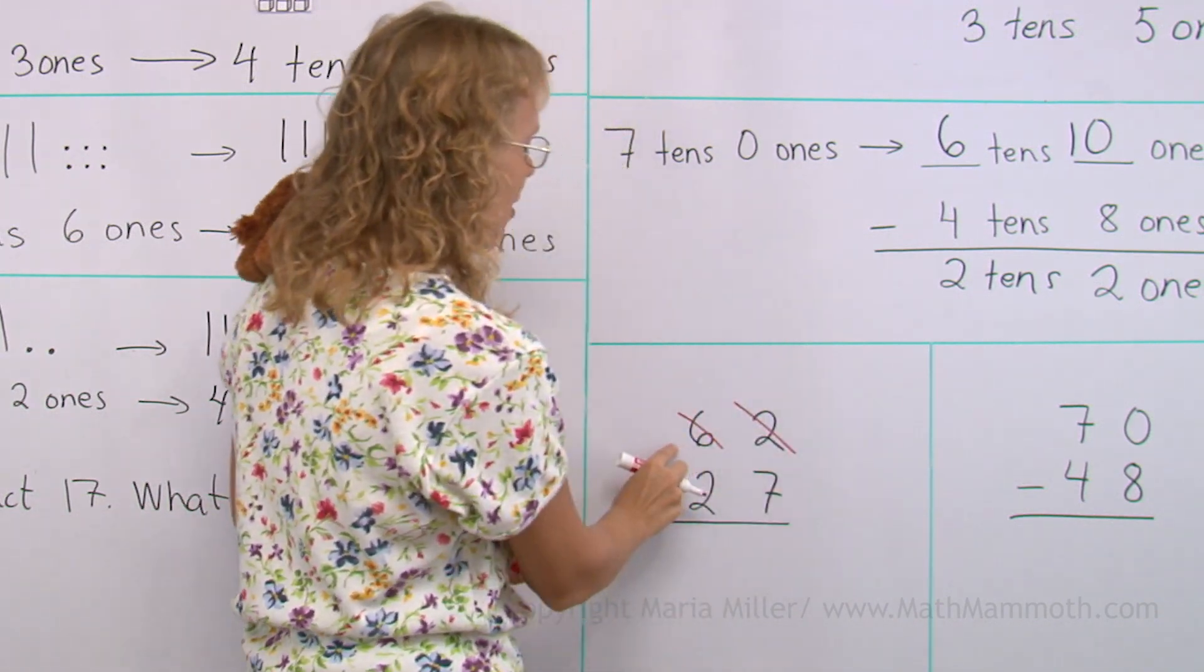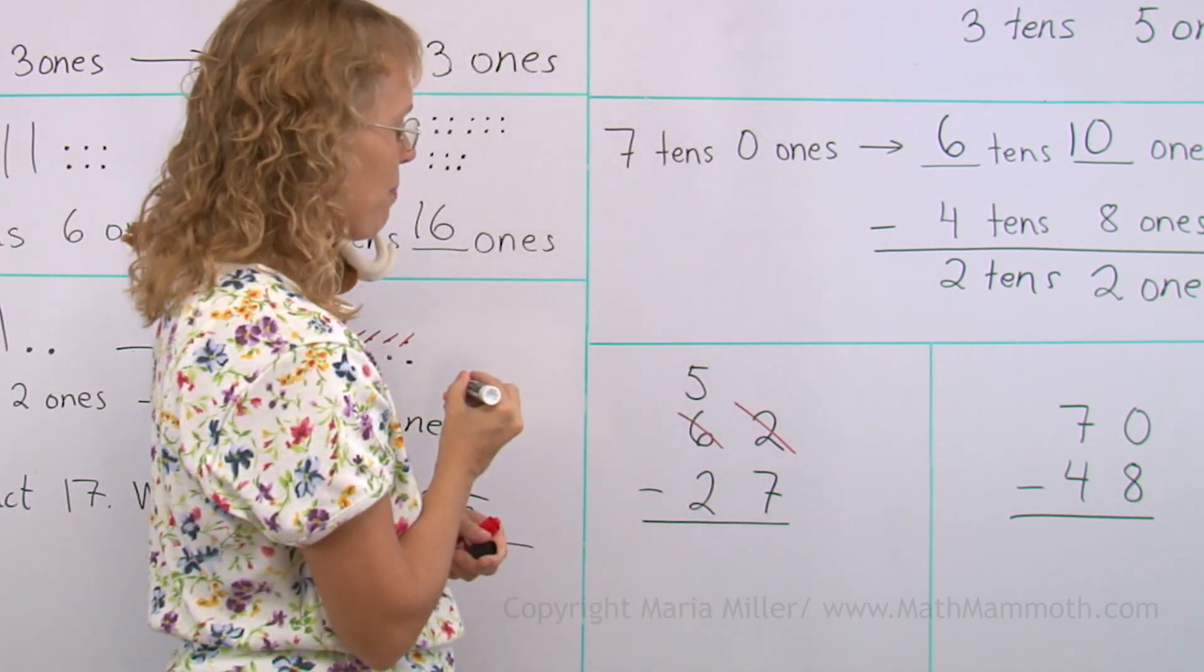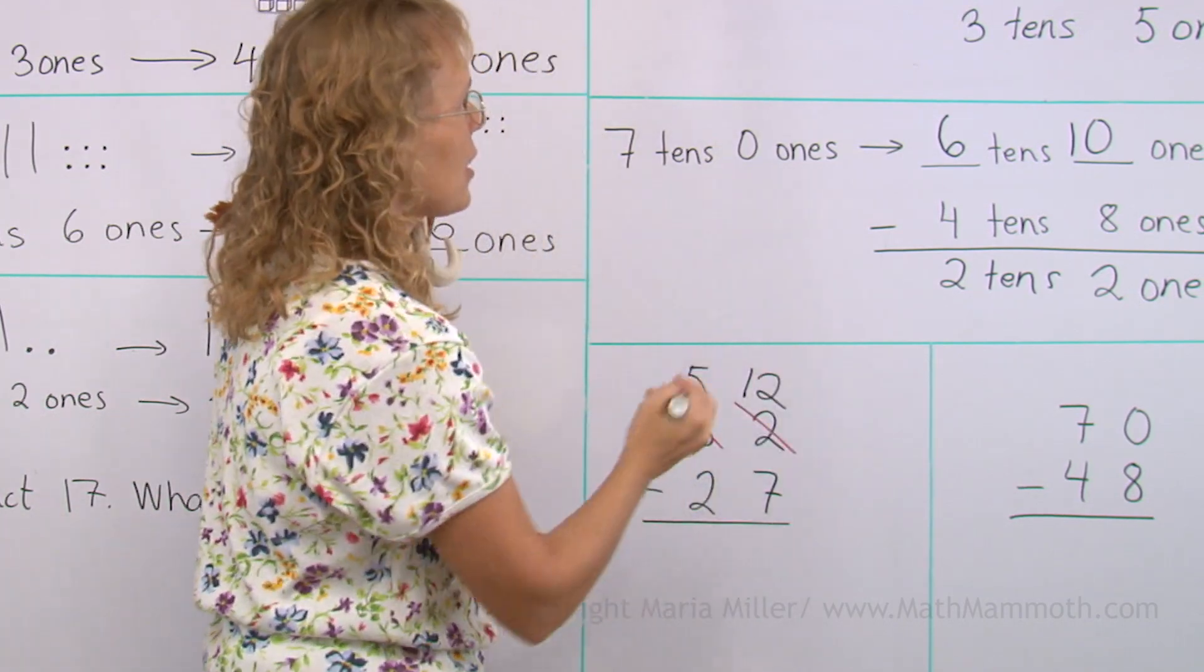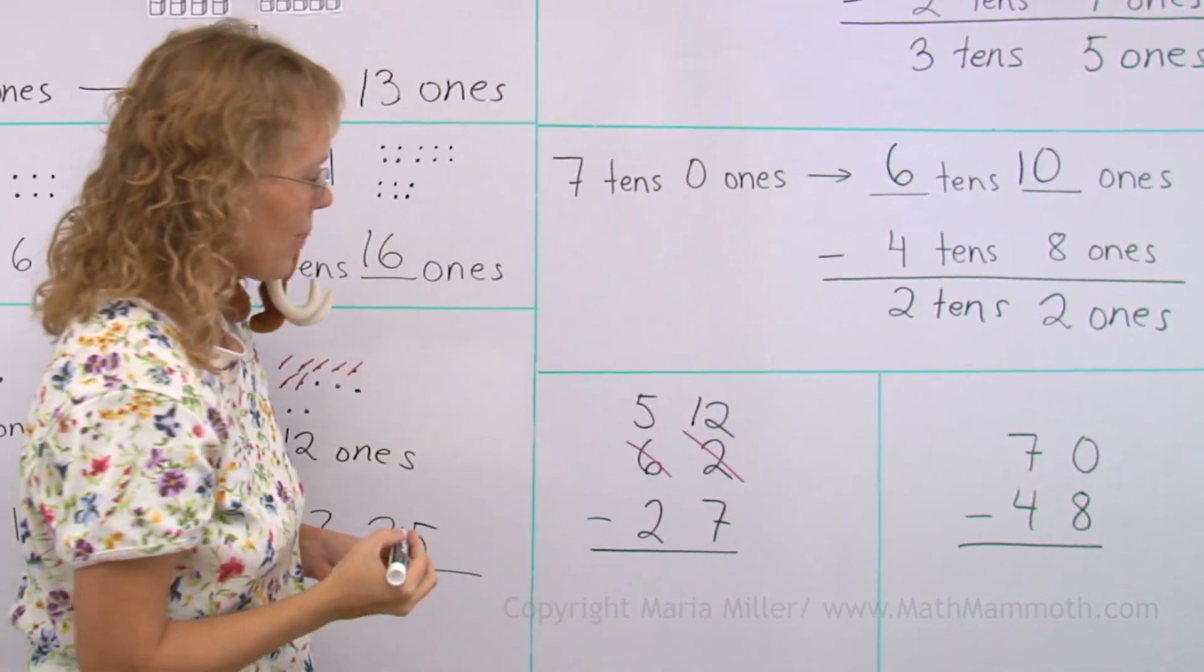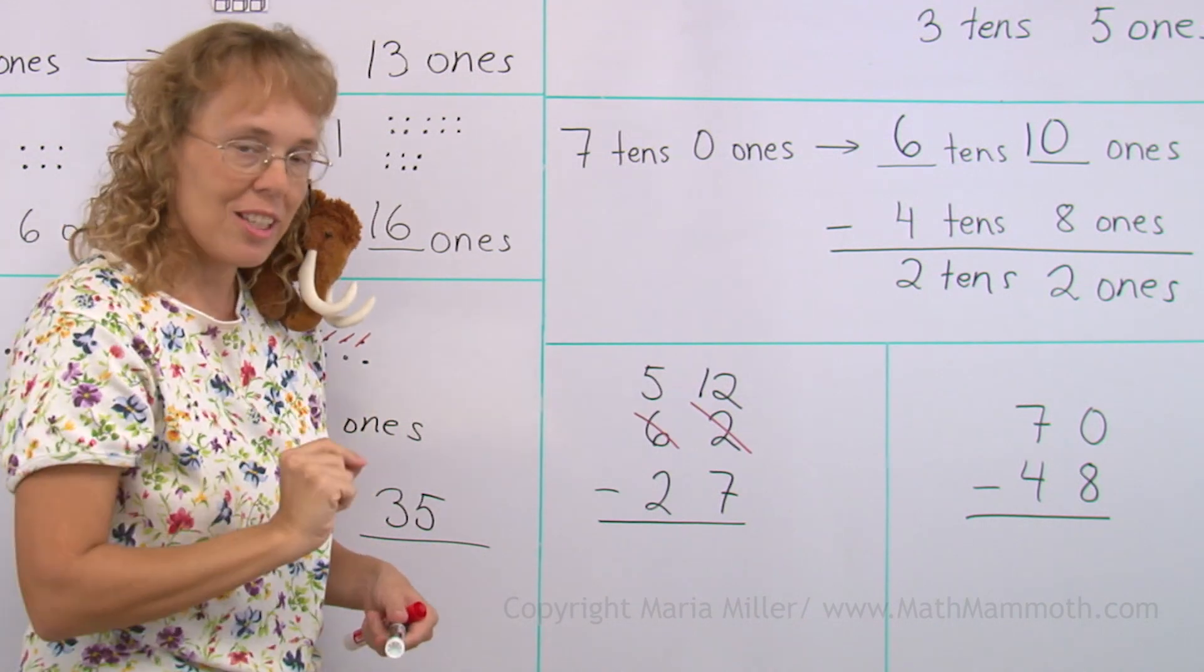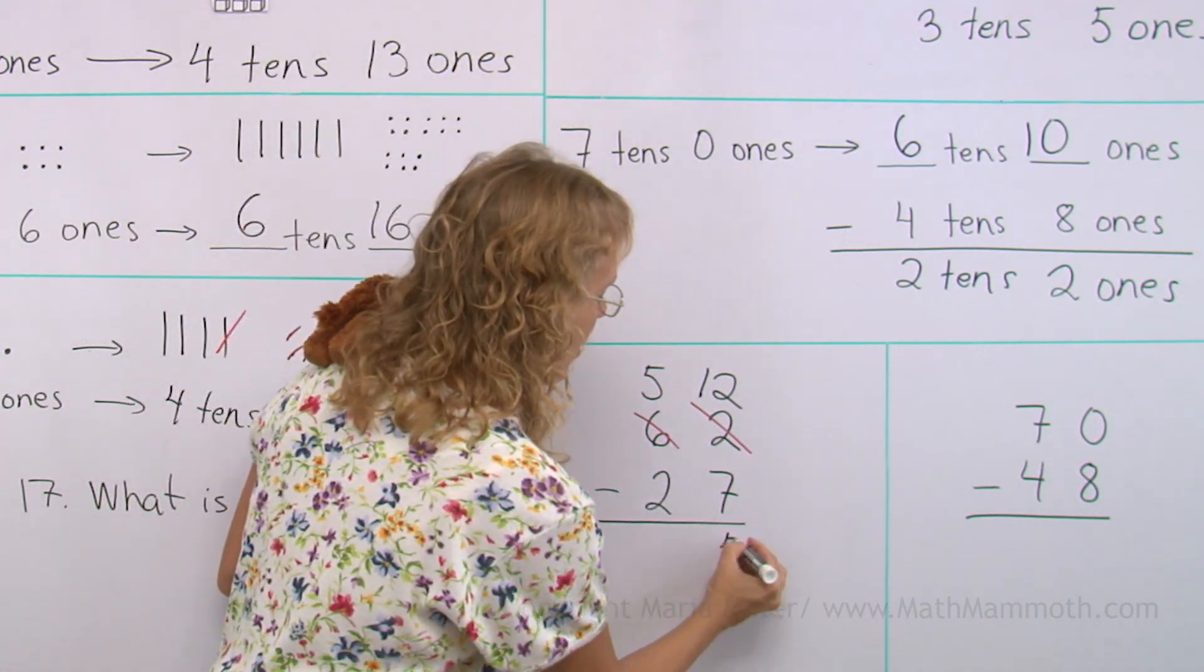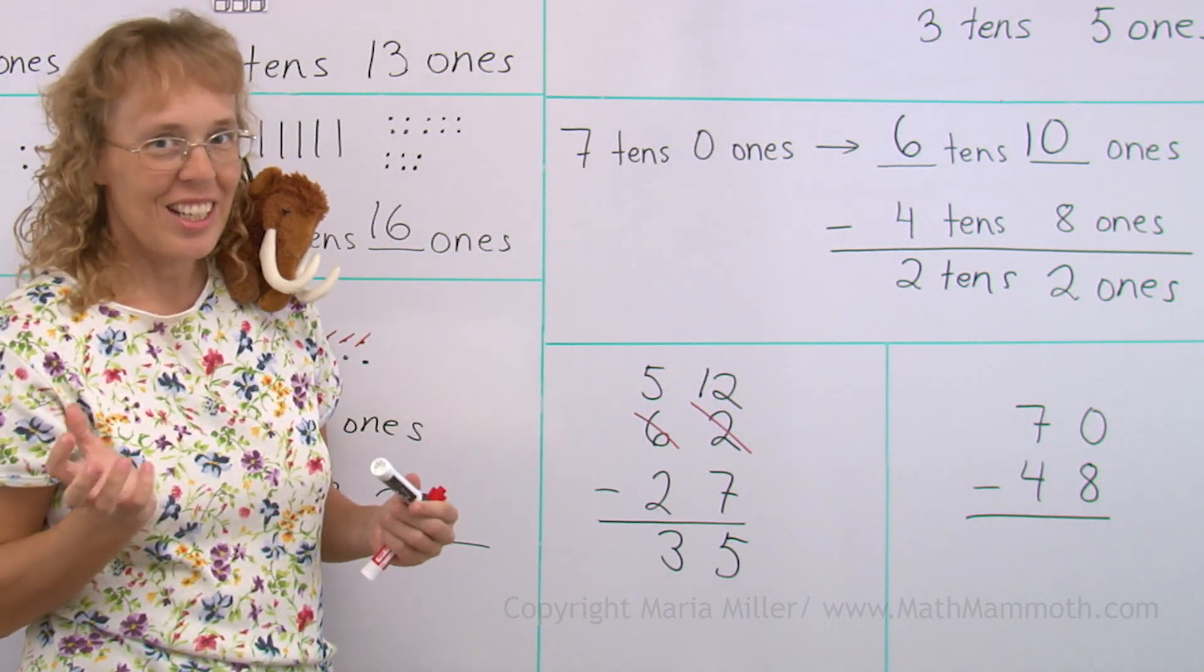And instead of six tens, I will have five tens. So I write the five there in place of six. And then instead of two ones, I will have twelve. Just like what we had here. Five tens, twelve ones. And now I subtract, basically ignoring these two numbers that were crossed out. Instead, I use the twelve and five. Twelve minus seven is five. Five minus two is three. Not too difficult, right?